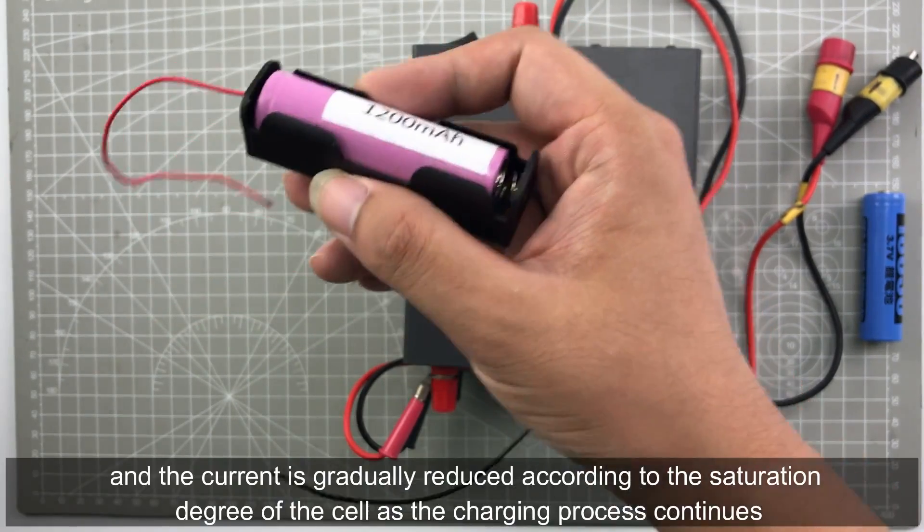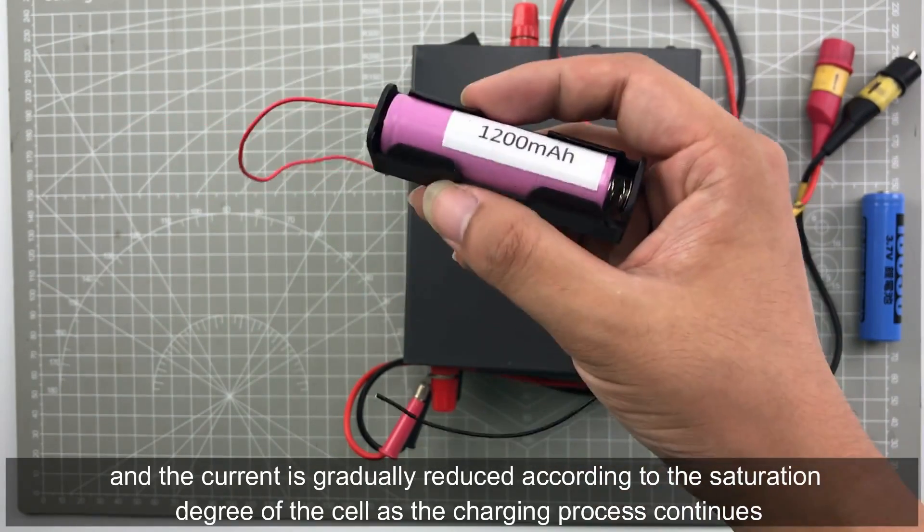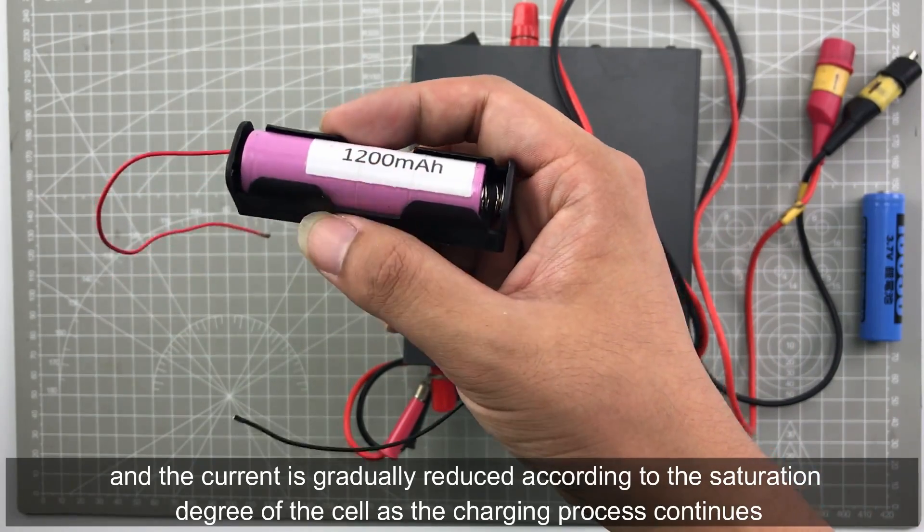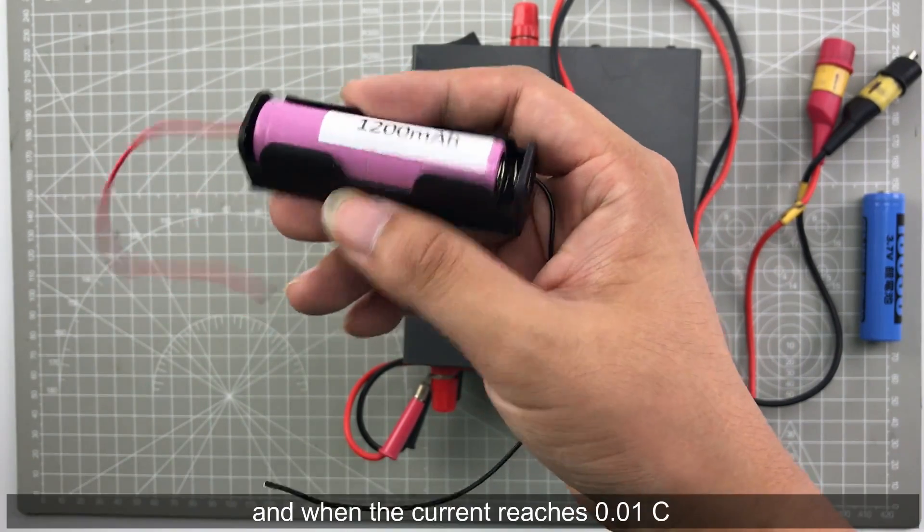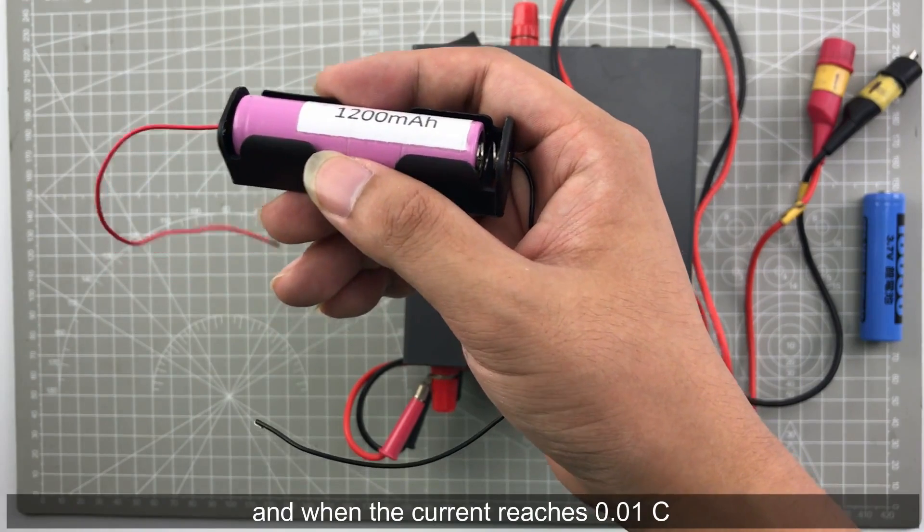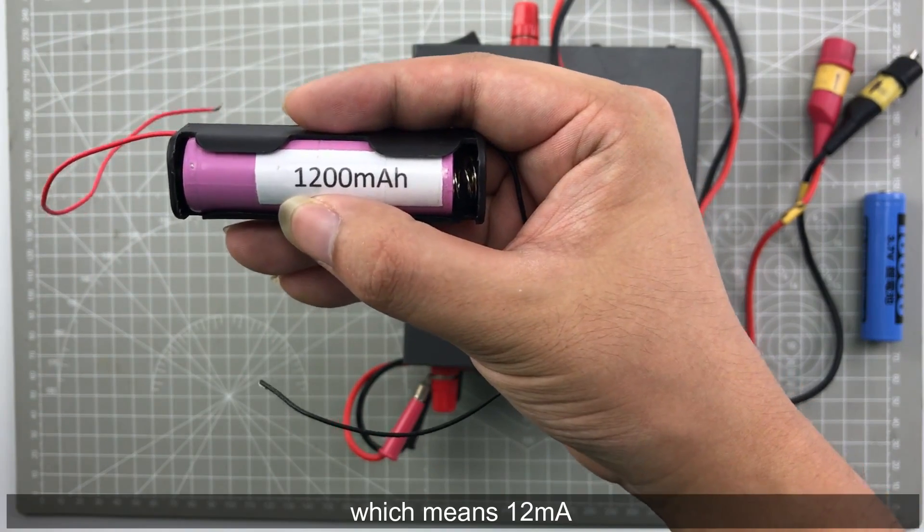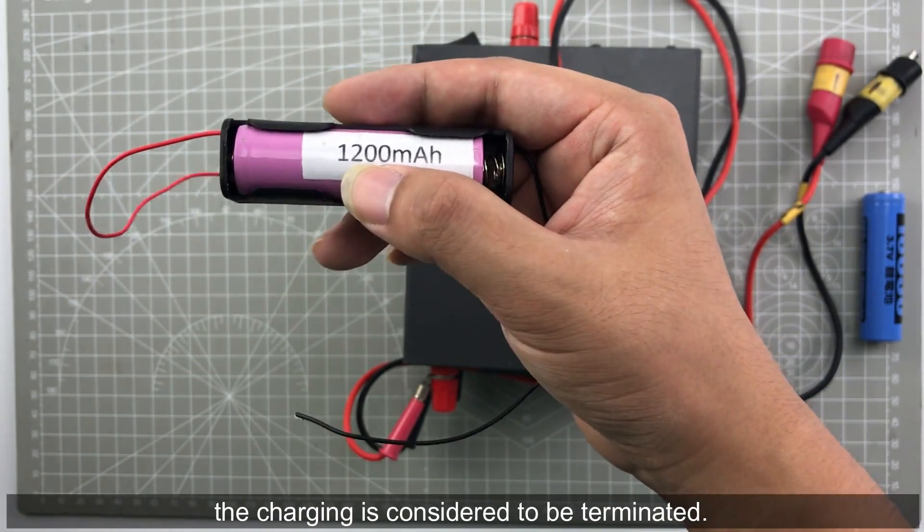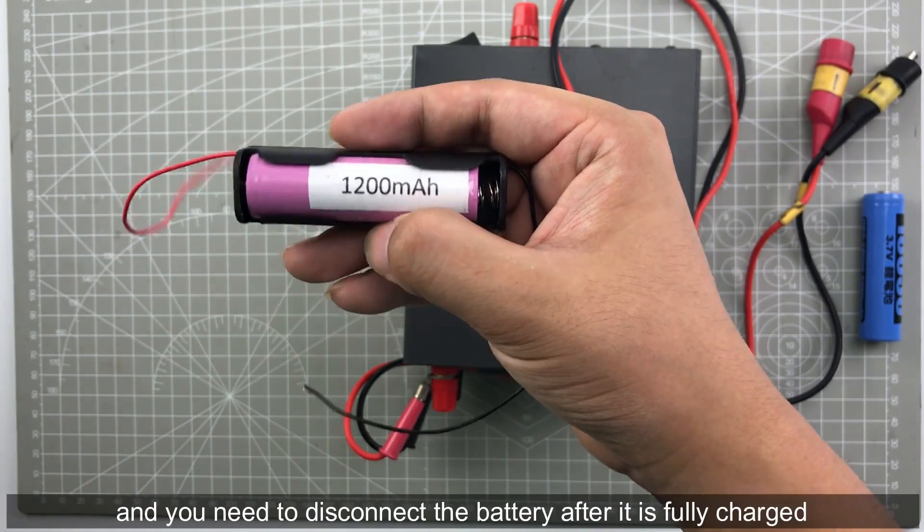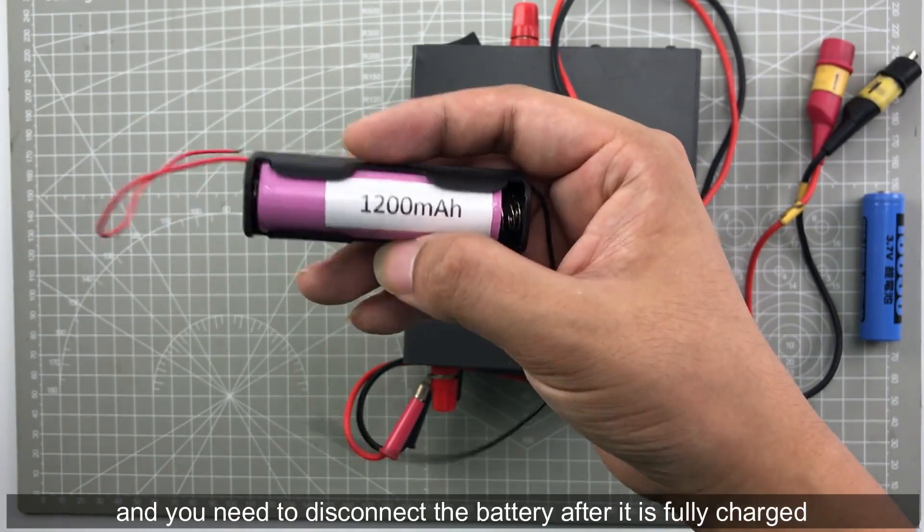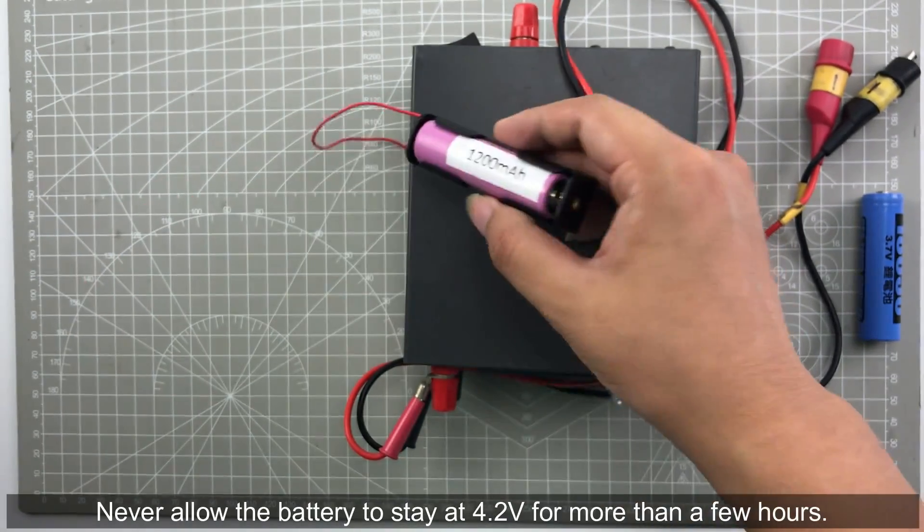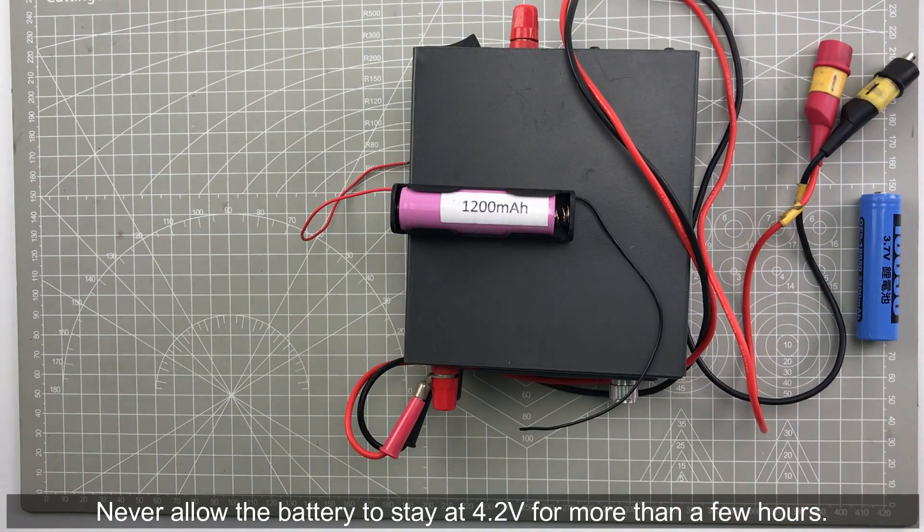And the current is gradually reduced according to the saturation degree of the cell as the charging progress continues. When the current reaches 1% CE, which means 12 milliamp hour, the charging progress is considered to be terminated. And you need to disconnect the battery after it is fully charged. Never allow the battery to stay at 4.2V for more than a few hours.